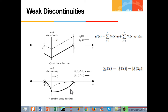The weak discontinuity enrichment function vanishes at both nodes 2 and 3. As a result, the interpolation is guaranteed without any shifting. In addition, the direct effect of the enrichment on displacement is limited only to the middle element which contains the weak discontinuity. However, an indirect influence exists due to different values of the derivatives of the enriched shape functions.